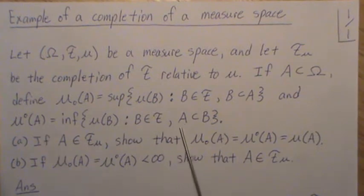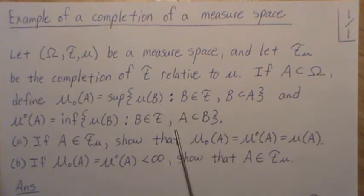And mu superscript zero is going to be the infimum of all the measures of B, such that B covers A. So A is a subset of B. Take all the measures of these and then take the smallest. That's the infimum. That's the closest one to A but could be bigger. And this is the closest one to A but could be smaller. They could equal.